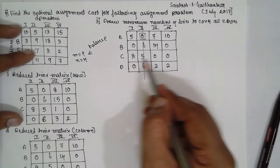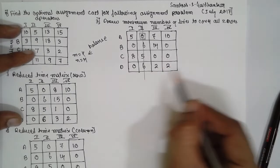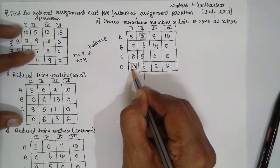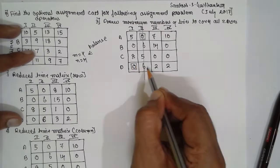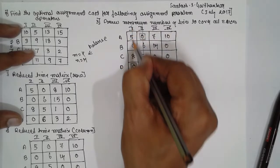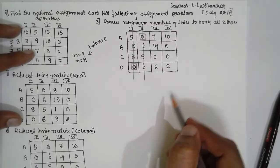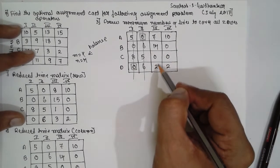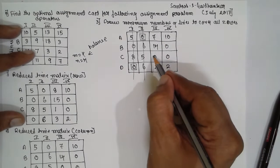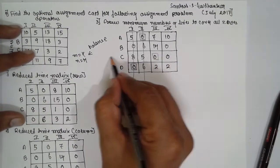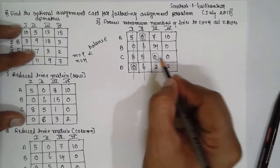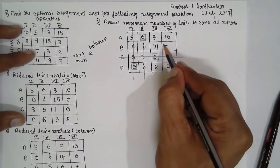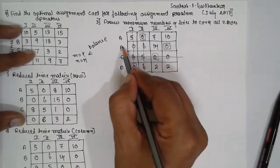Now go for the assignment here. The first row contains single 0, assign it. If it is row wise, you have to eliminate column. Second, there are two 0's, not possible. Third row, there are two 0's, not possible. Fourth one, there is single 0, assign it. Row wise means you have to eliminate column. Now go for the column wise. In the column there is a single 0, assign it, and you have to eliminate. If it is a column, you have to eliminate row. Next column, you have to eliminate row.